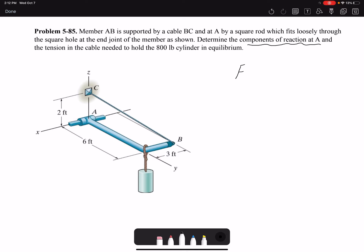The first step is to draw the free body diagram. So if I draw a free body diagram here I have the 800 pound weight of the cylinder. I'm going to call it the force of weight, and then at B I have the tension. Then I have reaction forces at A.